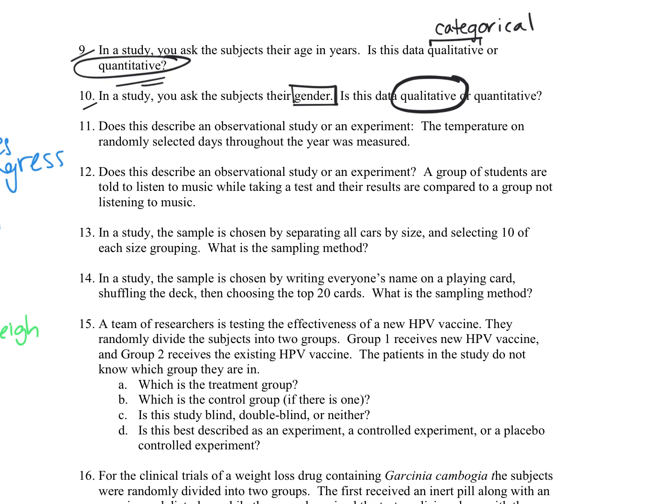Alright. And we're looking last at number 11. Does this describe an observational study or experiment? The temperature on randomly selected days throughout the year is measured. That would be an observational study because you're making an observation on those selected days throughout the year.